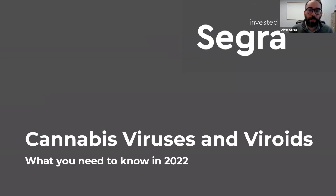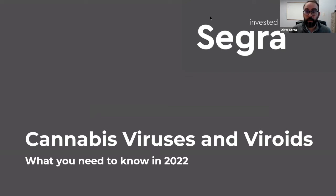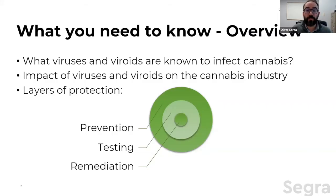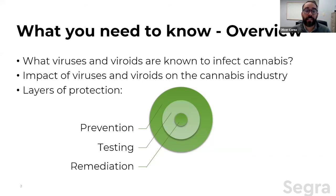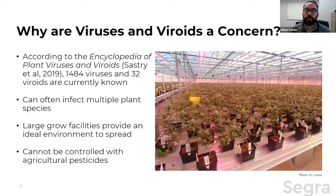We'll have a chance to speak with the panelists after a short presentation. The topic is cannabis viruses and viroids, and I'm glad there's so much interest in what you need to know in 2022. This will be a brief presentation — about 15 minutes — and we can't cover everything, but hopefully we'll get to your questions during the discussion and Q&A. I'll talk about what viruses are known to infect cannabis, what impact this has on the cannabis industry, and what you can do to protect yourself in terms of prevention, testing, and remediation.